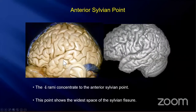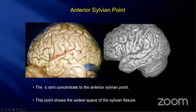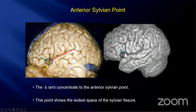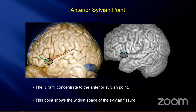Before I start to split the sylvian fissure, I always find the anterior sylvian point. The four rami concentrate at one point — this is the anterior sylvian point. The lower angle of the pars triangularis also shows the anterior sylvian point. This point shows the widest space of the sylvian fissure, so it is the best point to start splitting the sylvian fissure.